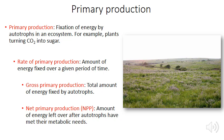The best-known example of primary production is plants turning CO2 into sugar. Primary production can be expressed as a rate — the amount of energy fixed over a given period of time — and in two fundamentally different ways: gross primary production, which is the total amount of energy fixed by autotrophs, and net primary production (NPP), which is the amount of energy left over after autotrophs have met their metabolic needs.